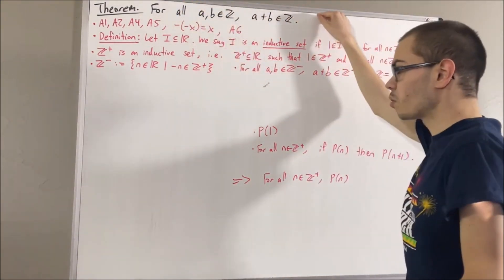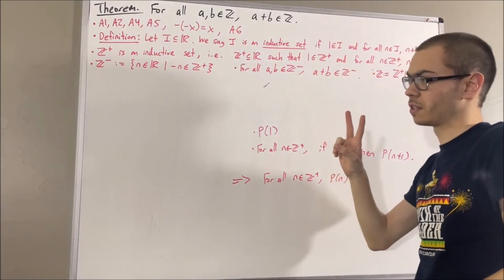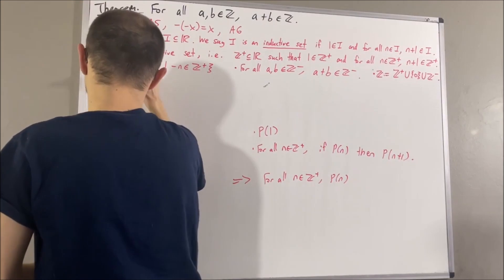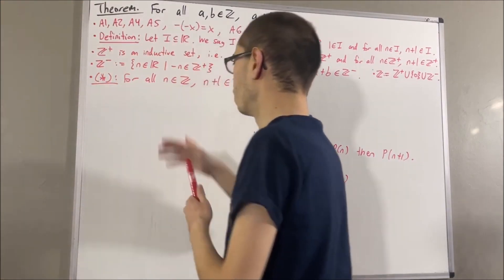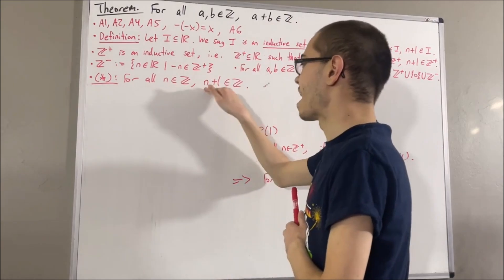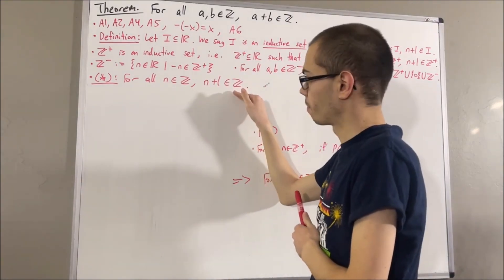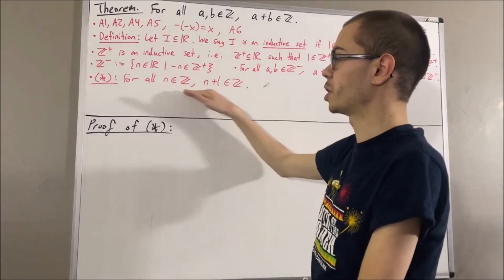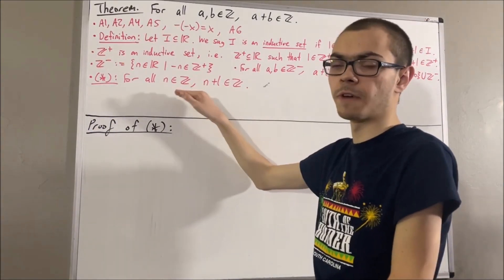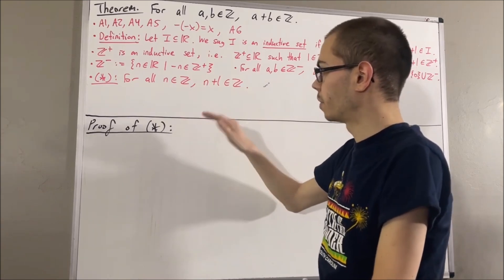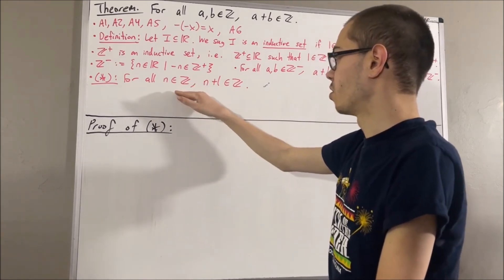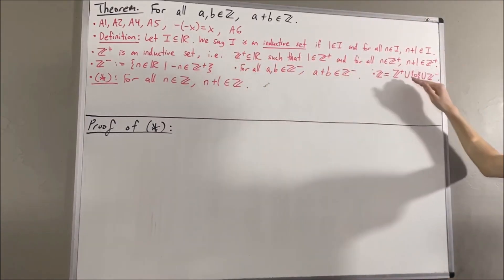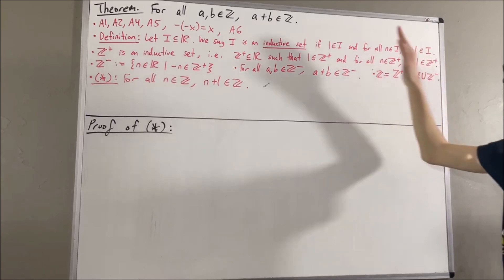Now we want to prove that the integers are closed under addition. Before we prove this, we are first going to prove two preliminary results. The first result is: for all integers n, n plus 1 is an integer. It's pretty clear that we can show this if n is a positive integer or if n is equal to 0. Because if n is a positive integer, then since the positive integers is an inductive set, it follows that n plus 1 is a positive integer, which is a subset of the integers, so n plus 1 is an integer.